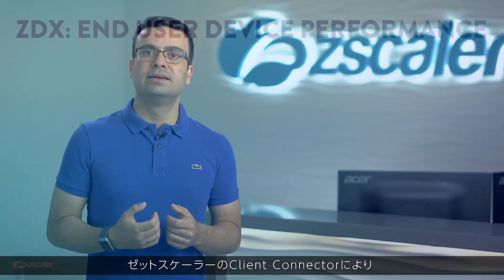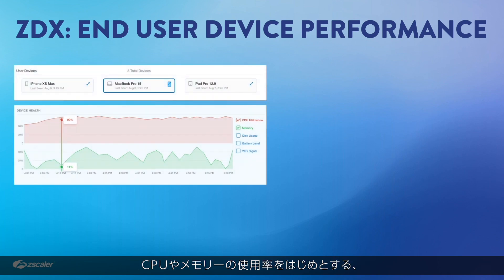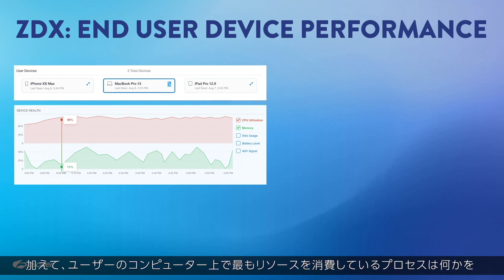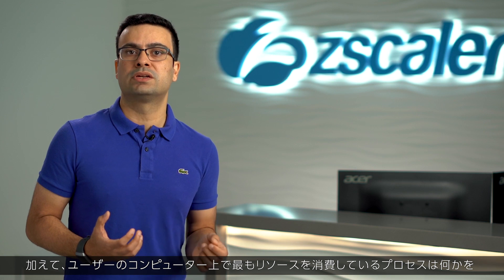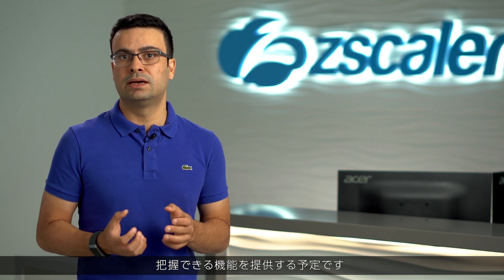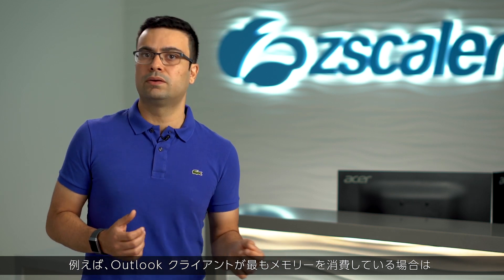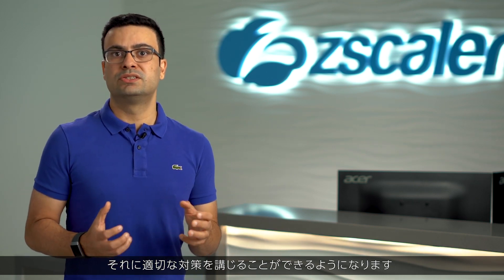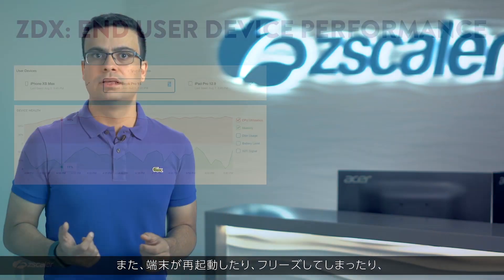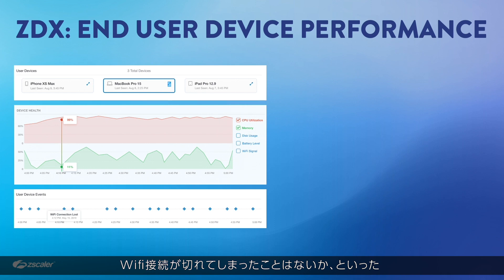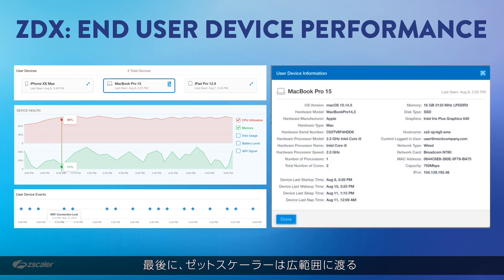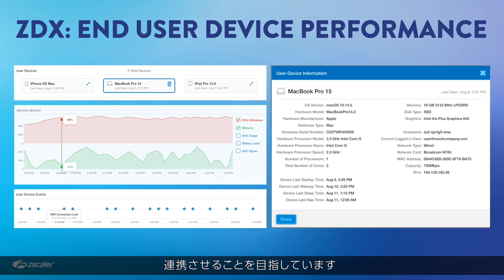With ZDX, we have instrumented Zscaler Client Connector to do deeper probing of end users' devices — looking at device utilization like CPU usage and memory usage. Very soon we will tell you which processes on your computer are consuming most of these resources. For example, whether it's the Outlook client or a weather widget consuming more memory, so you can take a preventive action. We also look at device events like whether your device restarted recently, crashed, or lost Wi-Fi connectivity to determine how healthy your device is. Finally, we are creating an extensive device fingerprint that in future we would open up with APIs to be consumed into your company's CMDB or other such databases.